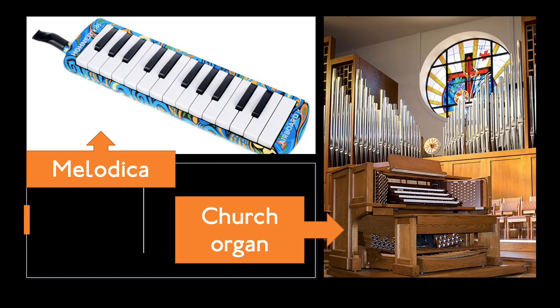The melodica is a keyboard instrument that you blow into — inside it is a reed for each note. A church organ is a lot bigger and of course you don't blow into it, but each note has several sets of pipes, all of which are powered by air from a big set of bellows. All of the different sounds on an organ are created by different kinds of pipes — some work a bit like a recorder, but others have reeds.